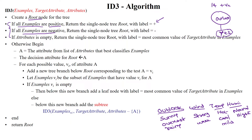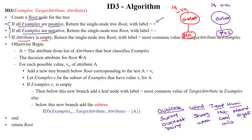Second case: if all the samples are negative class, we create a root node — say outlook — and label all 14 samples as belonging to the negative class, outputting only the label 'no.' Third case: if the attributes list is empty and has no values, we take the target value of the samples — if it is positive, we assign the positive class.